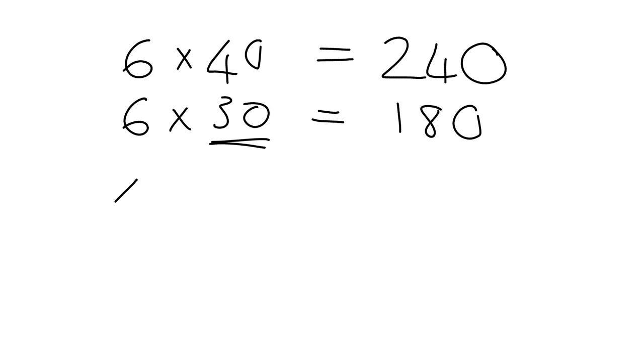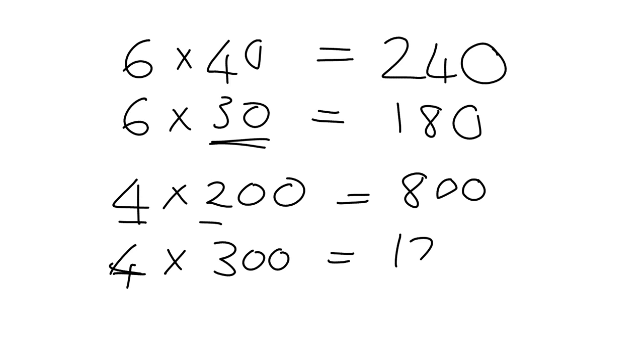Or if you had 4 times 200, it's the same as 4 times 2 and then multiplied by 100. In other words, 4 times 2 is 8, and then multiplying by the 100 will put two zeros on the end. Or if you had to do, say, 4 times 300, it's going to be 4 times 3, which is 12, and then you add on the two zeros because it was actually 300.